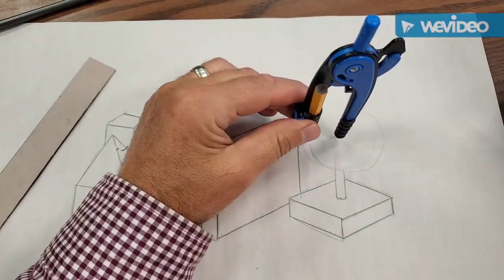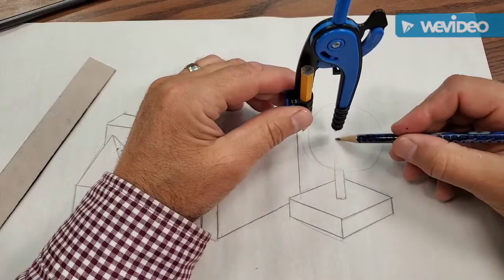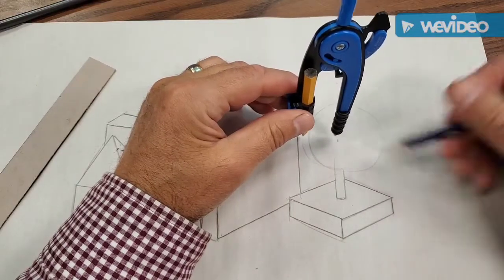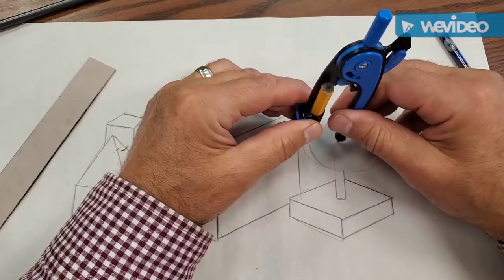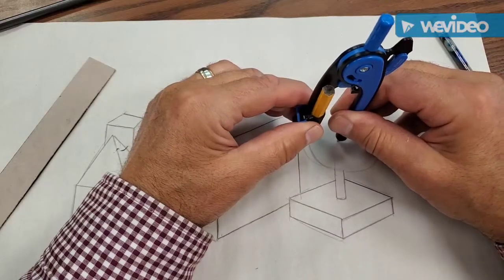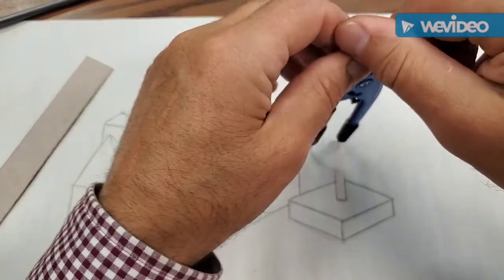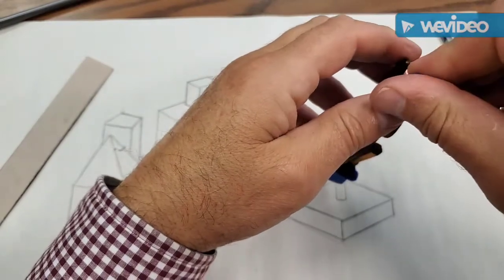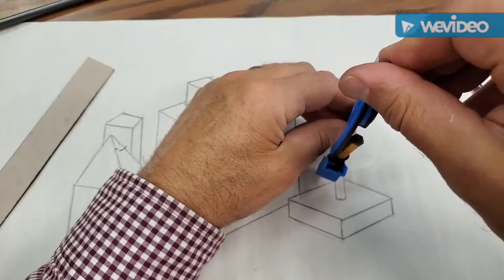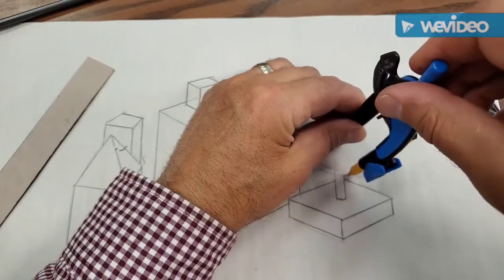Now, I'm going to put that point right in the center of where this post is, so probably about right there. And once again, push the point down, keep your pressure on the point, and then just gently rotate this around, and you should be able to draw a perfect circle.